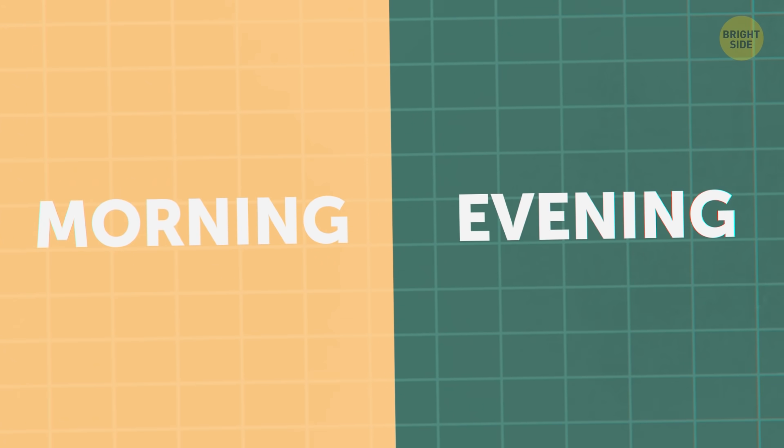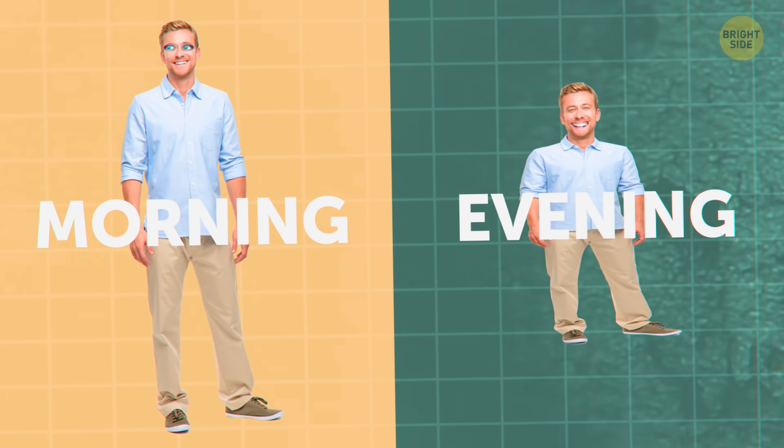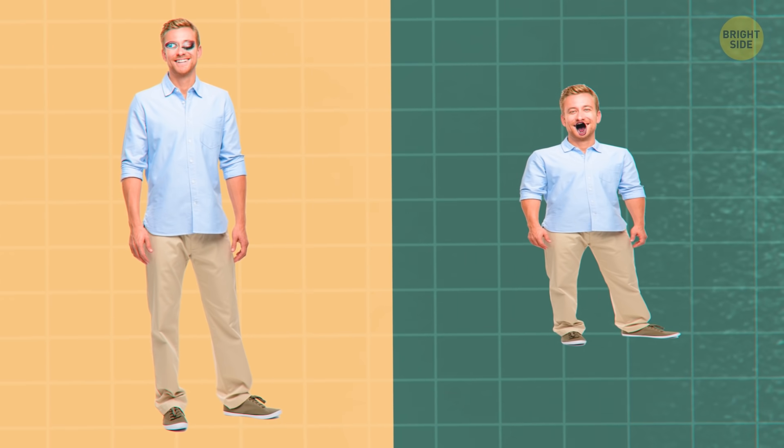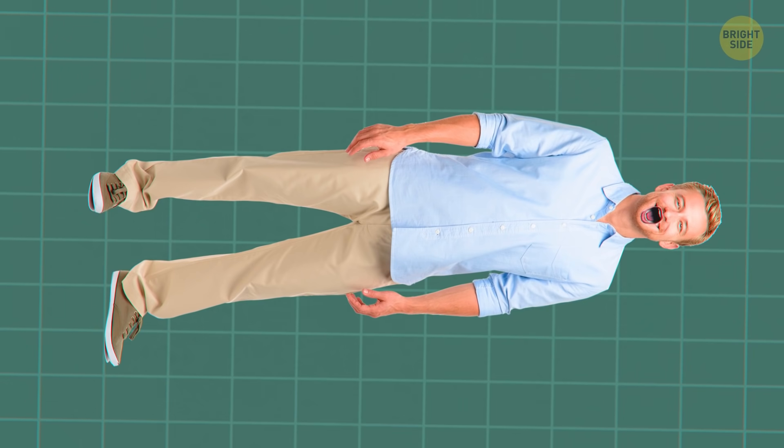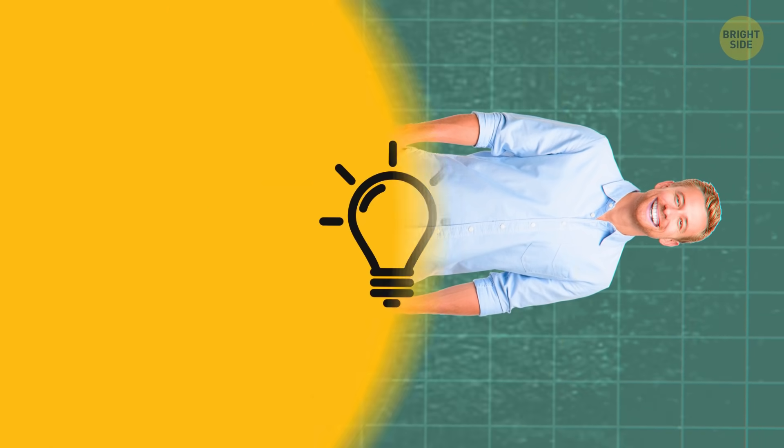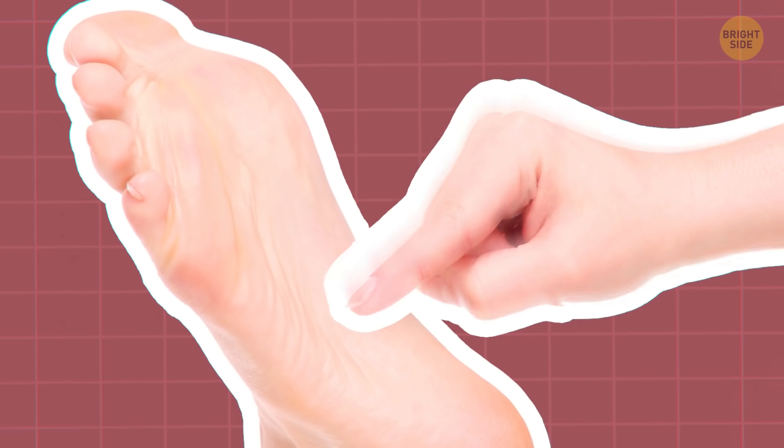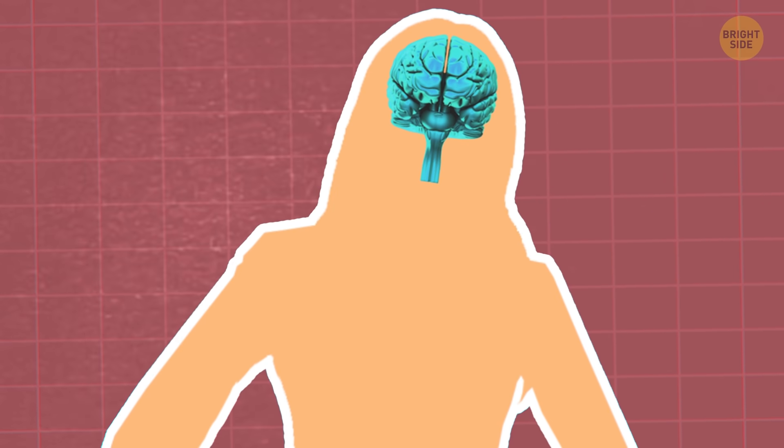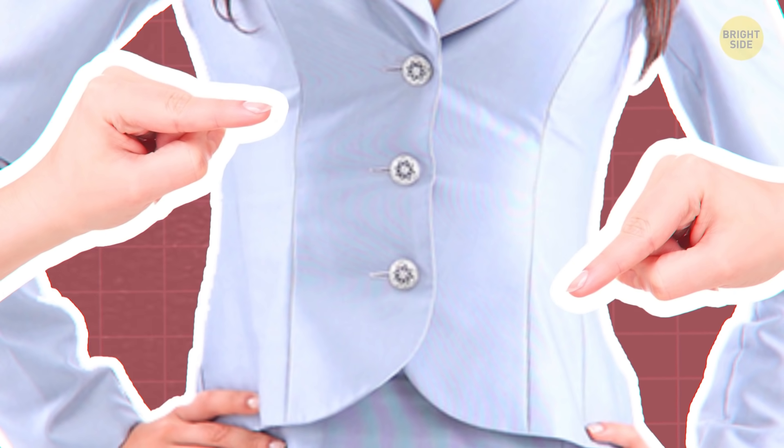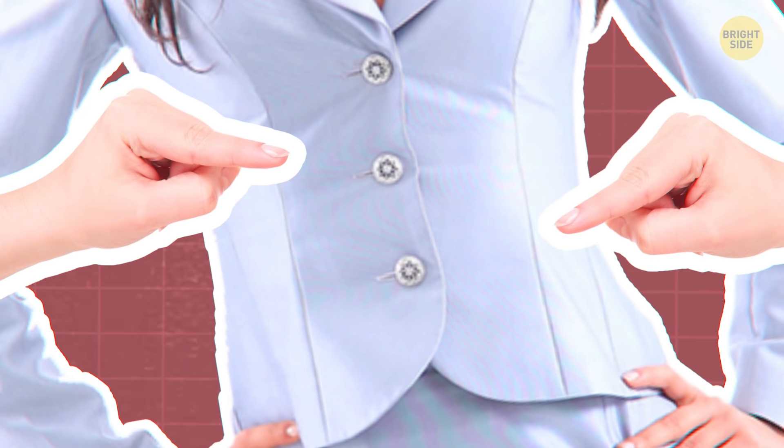You're a tad bit taller, about the width of a fingernail, in the morning than in the evening. Throughout the day, gravity squishes the space between your vertebrae and in your knees. They get stretched back out when you lie down all night. Now you can't tickle yourself. Go ahead and try it. Your brain already knows your intentions and gets ready for it. You can't prepare yourself when others are about to tickle you, though.